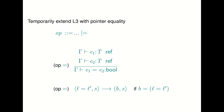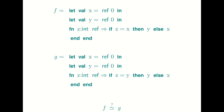Now imagine extending L3 with pointer equality. In Java or OCaml, if you have two references you can compare them for object identity. The typing says: given two references, test them for equality. The operational semantics is: two pointers are the same if and only if they are physically the same pointer — if L and L' are the same pointer, return true; otherwise return false.